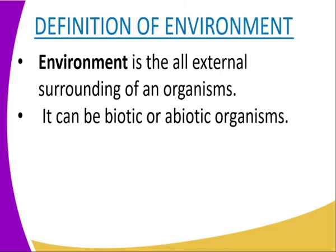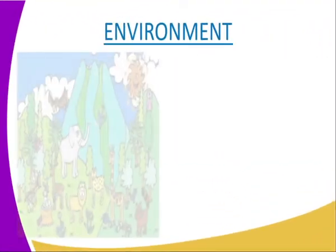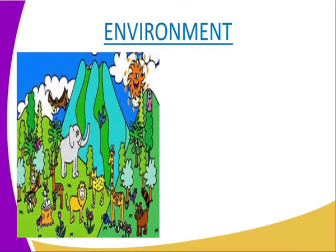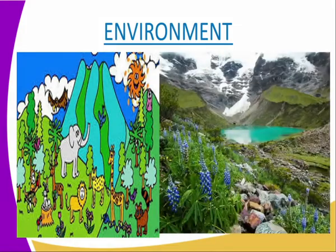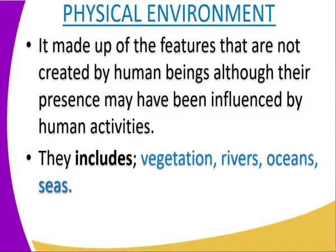Whether this organism is a living thing or a non-living thing, everything that surrounds it is its environment. It can include biotic or abiotic organisms. As we can see in our diagram, we have animals, we have vegetation, we also have rocks and mountains — everything we can see is the environment.